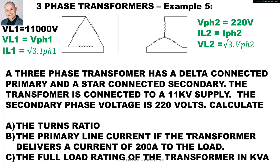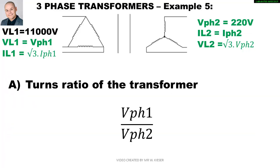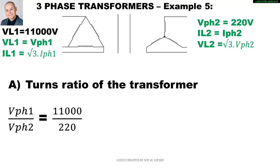Example 5. A three-phase transformer has a delta connected primary and a star connected secondary, connected to an 11 kV supply. The secondary phase voltage is 220 volts. For delta, VL1 equals V phase 1, so the primary phase voltage is 11,000 volts. To calculate the turns ratio: V phase 1 over V phase 2 equals 11,000 over 220. Since 220 goes into 11,000 fifty times, the ratio is 50 to 1.